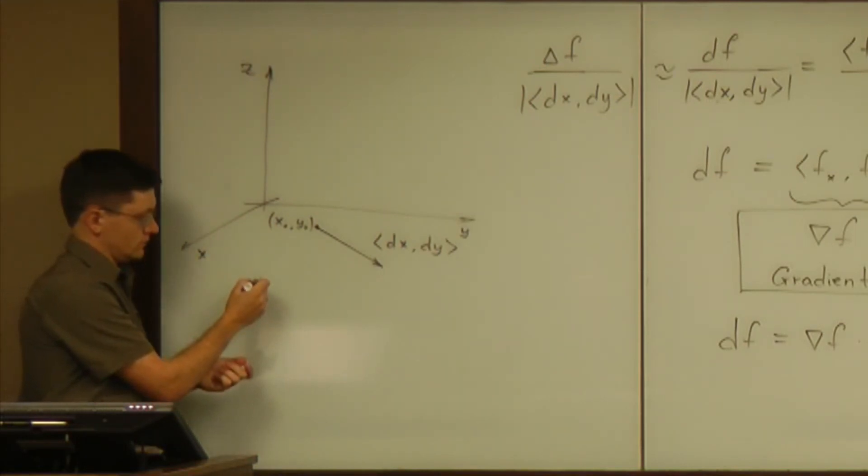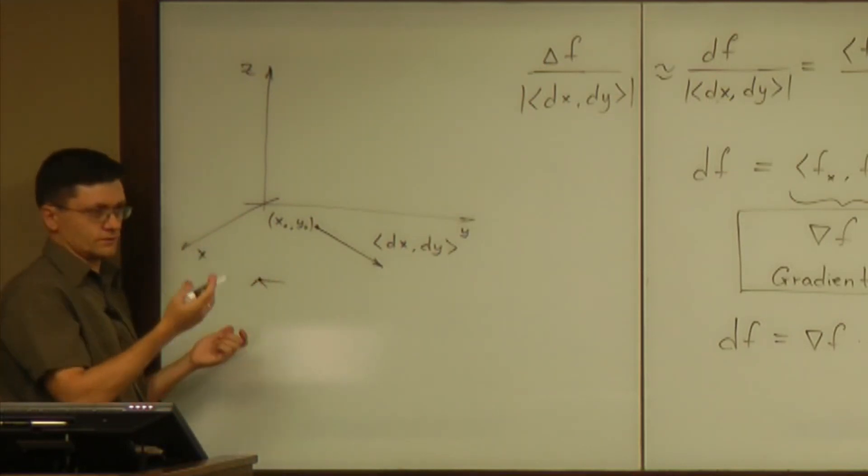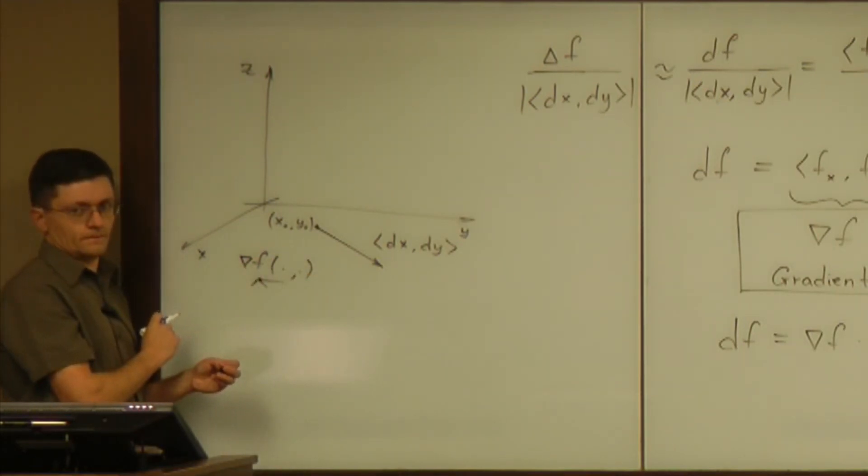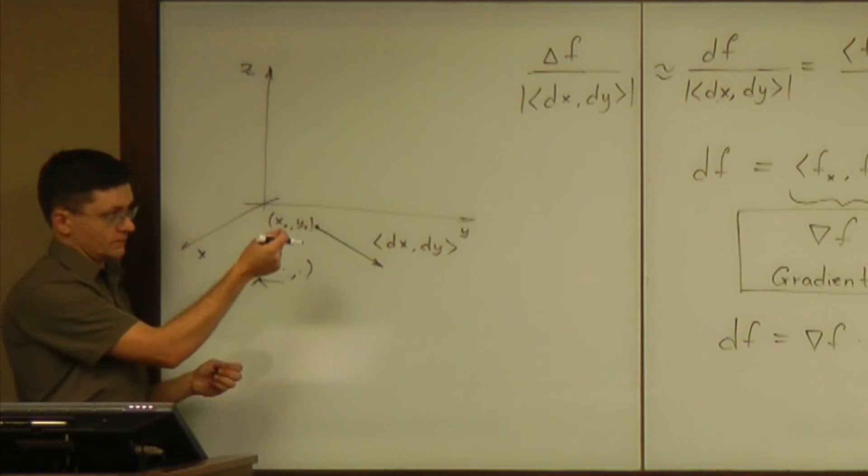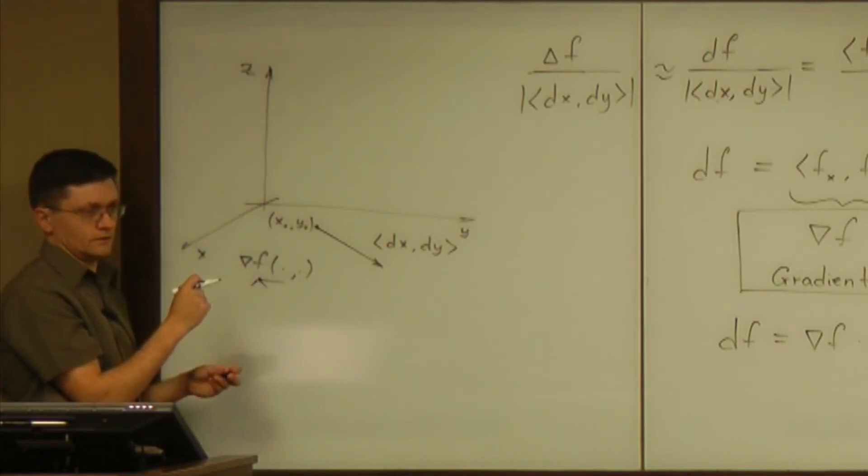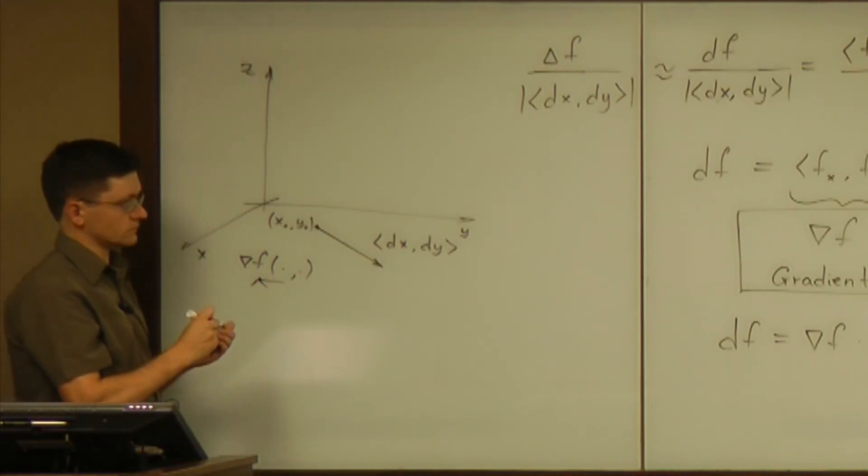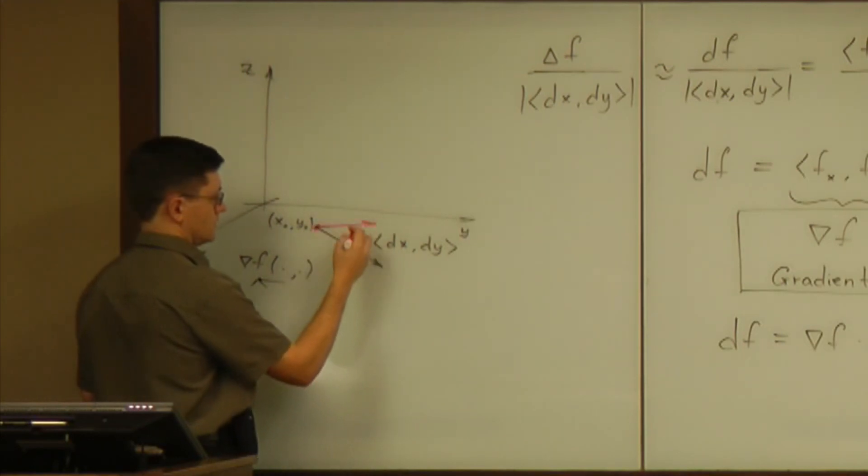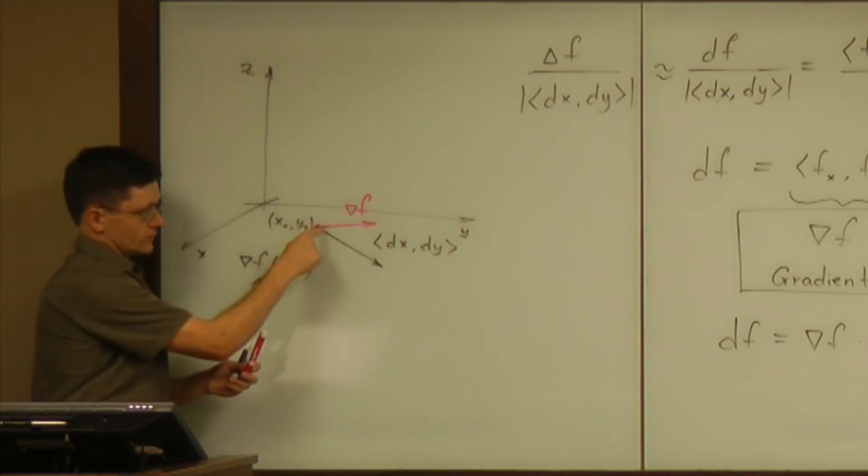So the directional, all the directional derivatives are going to be different. So that gradient really depends on where you take the point, so it's going to be an assignment of a vector to every single point on the plane. So let's say the gradient of f at this point is that vector.